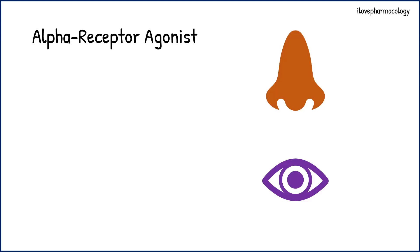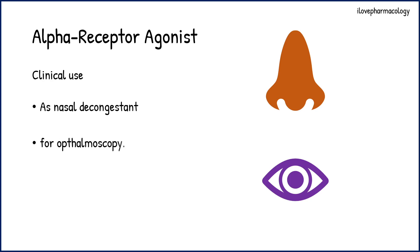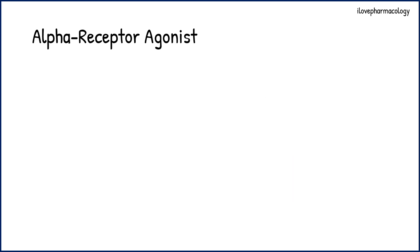Moving on to the therapeutic indications of alpha receptor agonists: they are used as nasal decongestants to relieve nasal congestion, and they can also be used for ophthalmoscopy as they produce dilatation of the pupil. These are the two very important indications of alpha receptor agonists.